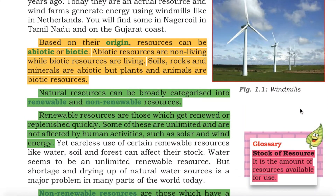Based on their origin, resources can be abiotic or biotic. Abiotic resources are non-living while biotic resources are living. Soils, rocks and minerals are abiotic, but plants and animals are biotic.